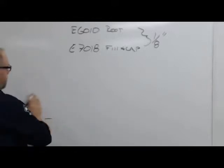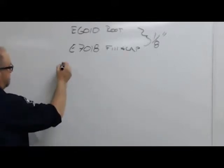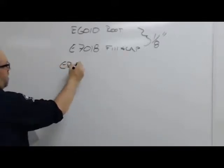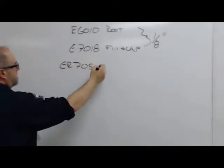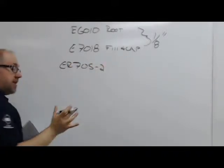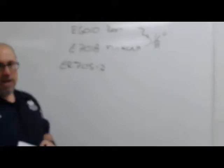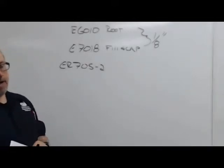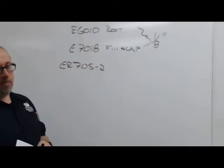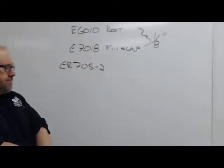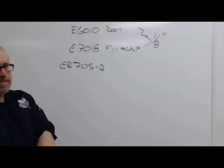For TIG, it's going to be ER70S-2, usually, for mild steel applications. For stainless, it'll be 308 or 316 generally for a 304 pipe. Your welding spec will tell you all that stuff.